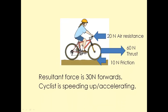Looking at another starter activity here — on this cyclist, there are a few forces acting. We've got 20 Newtons. We measure forces in Newtons, and that is going to be a one-mark question in the exam. So: 20 Newtons backwards due to air resistance, 60 Newtons forward as thrust, and 10 Newtons backwards due to friction.